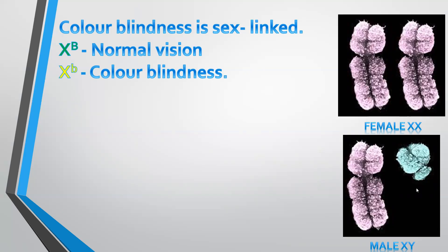The Y chromosome does not have the locus or position for the allele for colorblindness, and therefore does not carry any information regarding colorblindness. So a male would only carry one allele for colorblindness on his X chromosome.